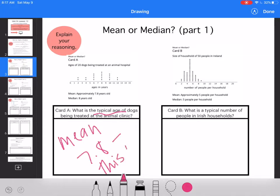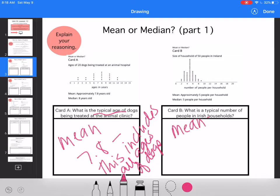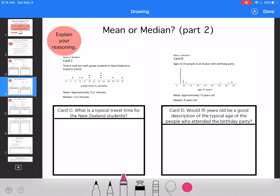What is the typical number of people in Irish households? You go anywhere from two to nine. The mean is five people. If I say five people, that means that everybody has five people in it, and I don't agree with that. So I think the mean is more appropriate because it includes the outliers in the data.